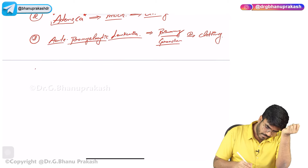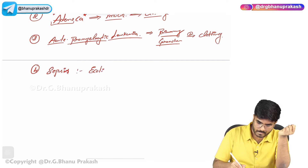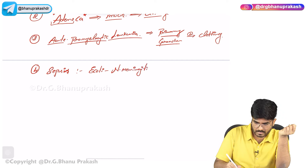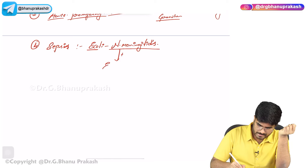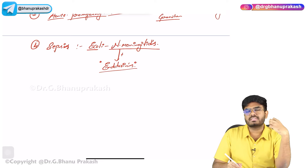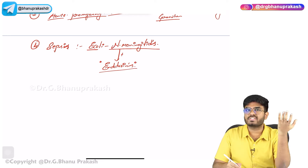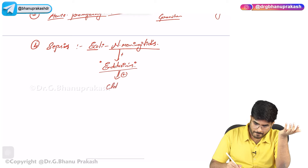Another cause is sepsis — infection within the blood — especially infections with E. coli or Neisseria meningitidis. These organisms produce bacterial endotoxins. These endotoxins act on endothelial cells, stimulating them to release tissue factor, which starts the clotting cascade. In simple terms, these endotoxins favor and stimulate clotting.